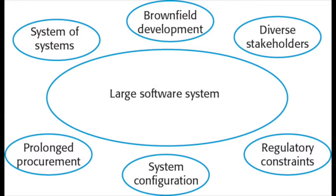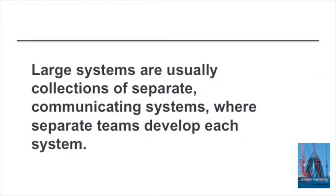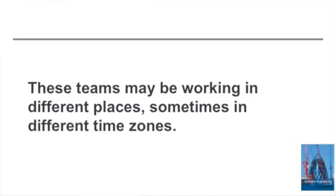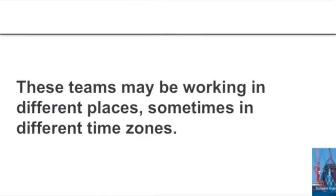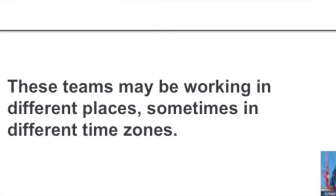Large systems are not usually just individual systems but are made up of a number of separate independent systems. The fact that large systems have a number of communicating systems is one thing, but these systems are often developed and managed by different teams. They may be in different time zones, and it's very difficult to get a coherent picture of how these systems operate and how they're managed.